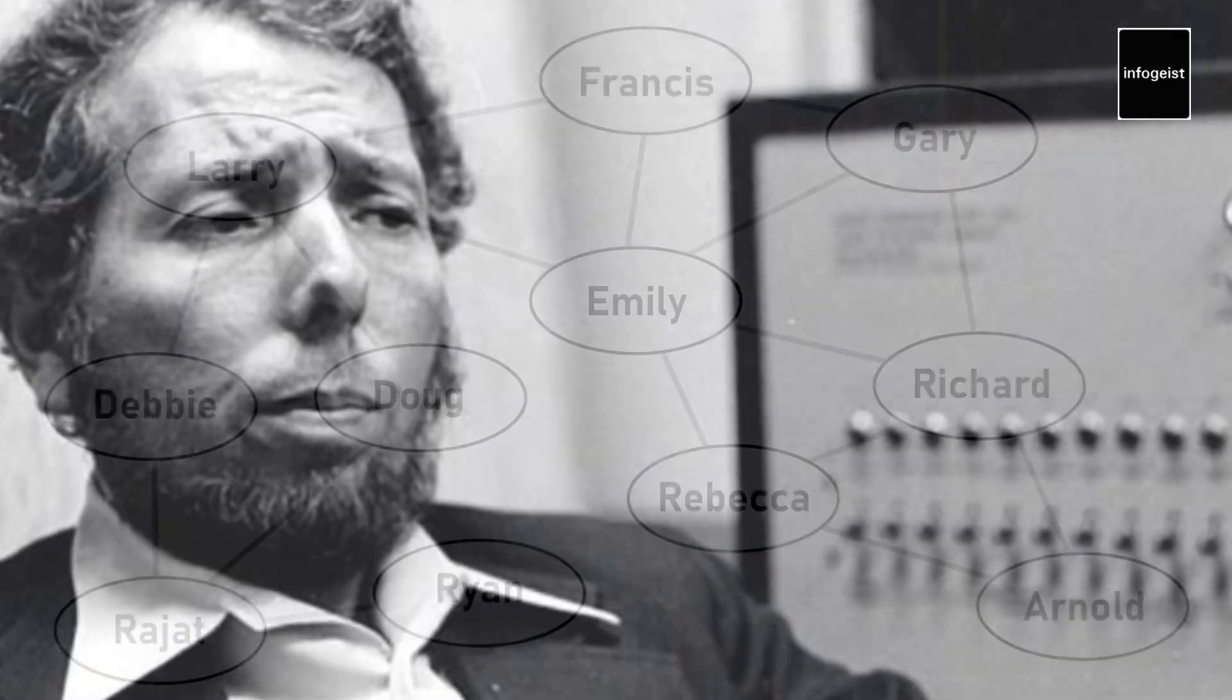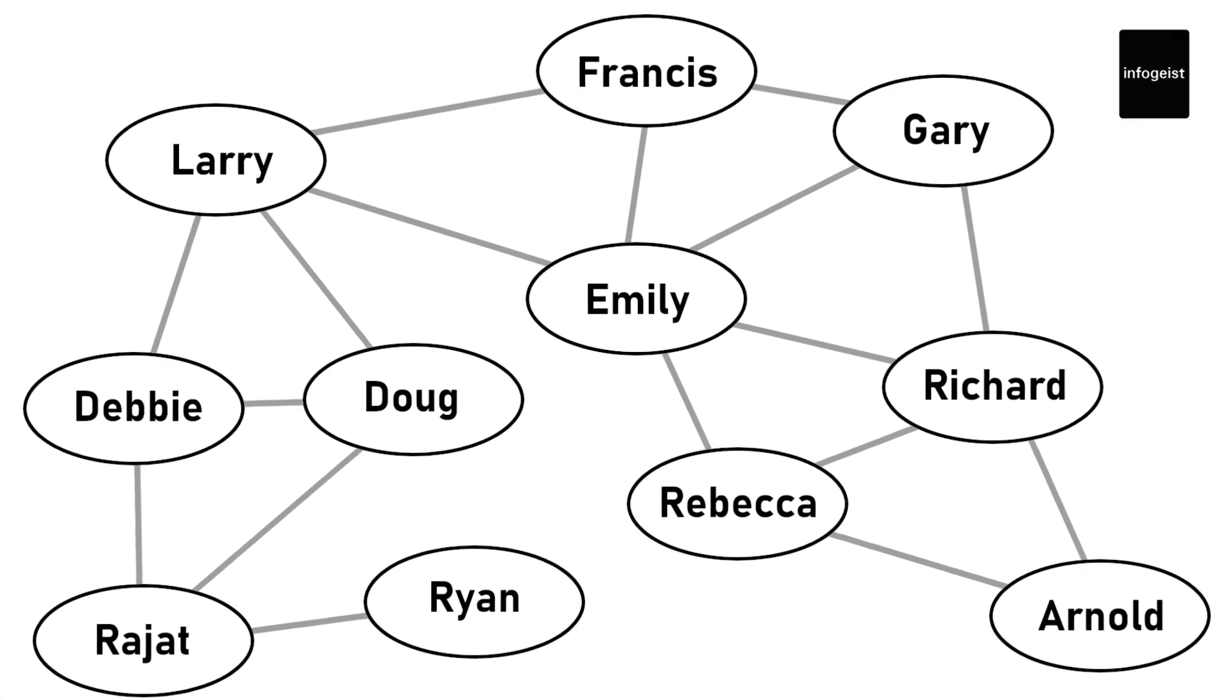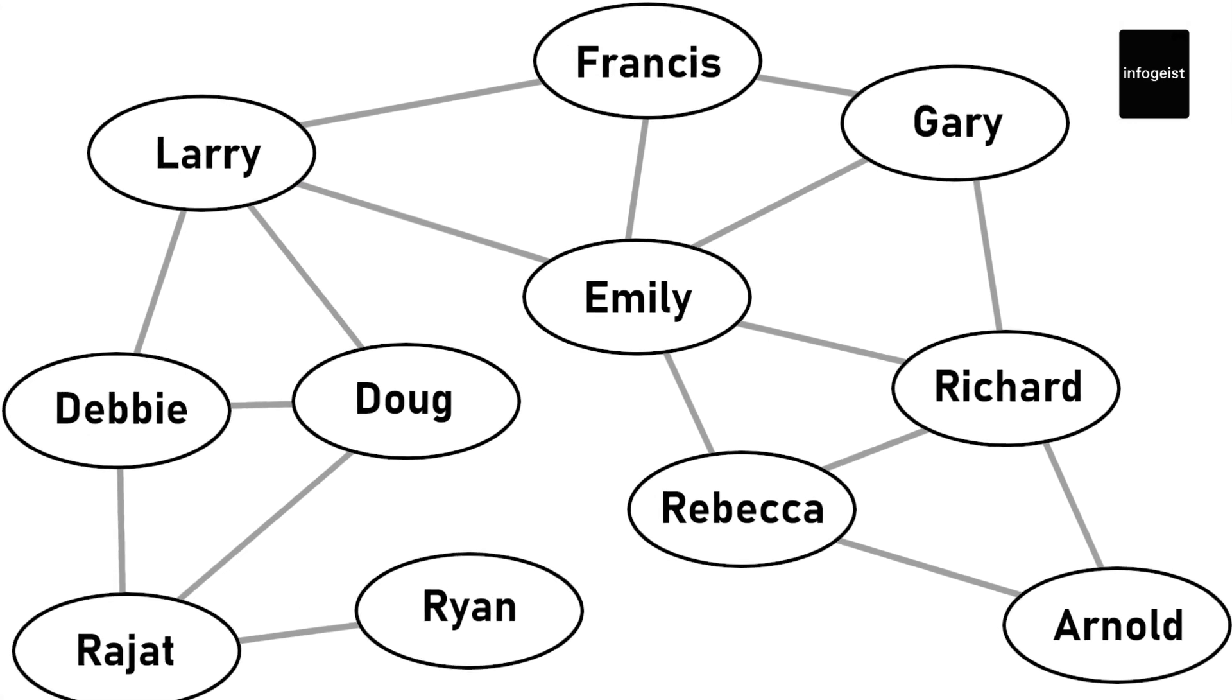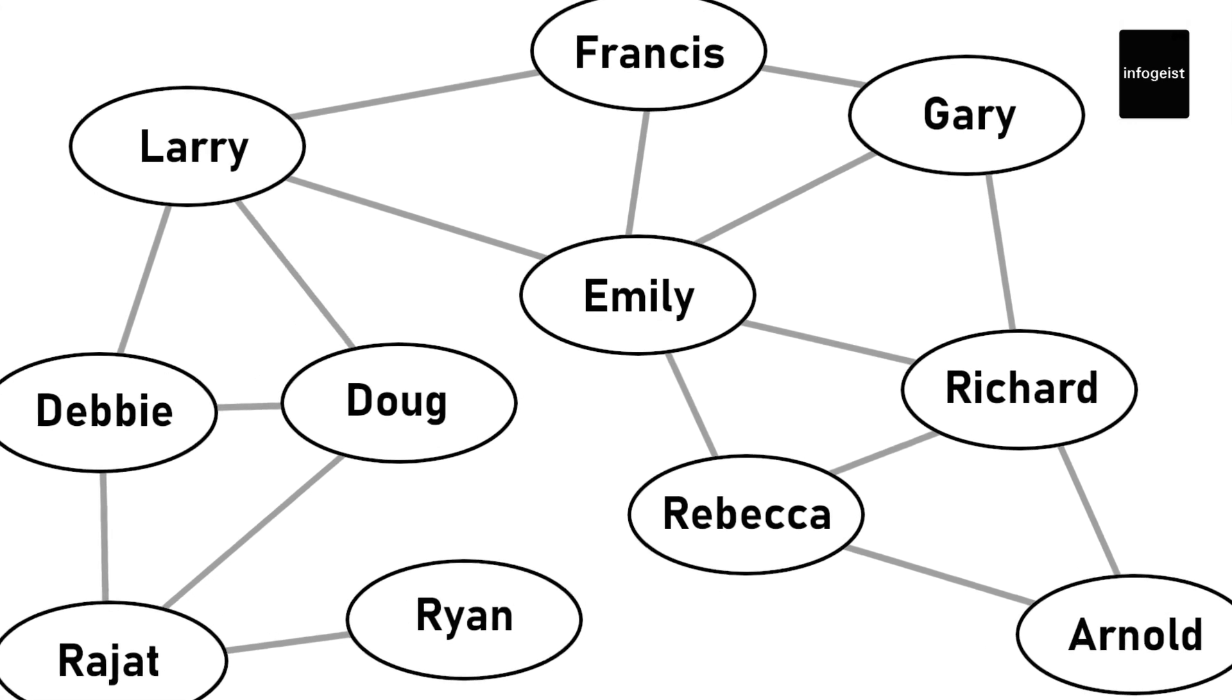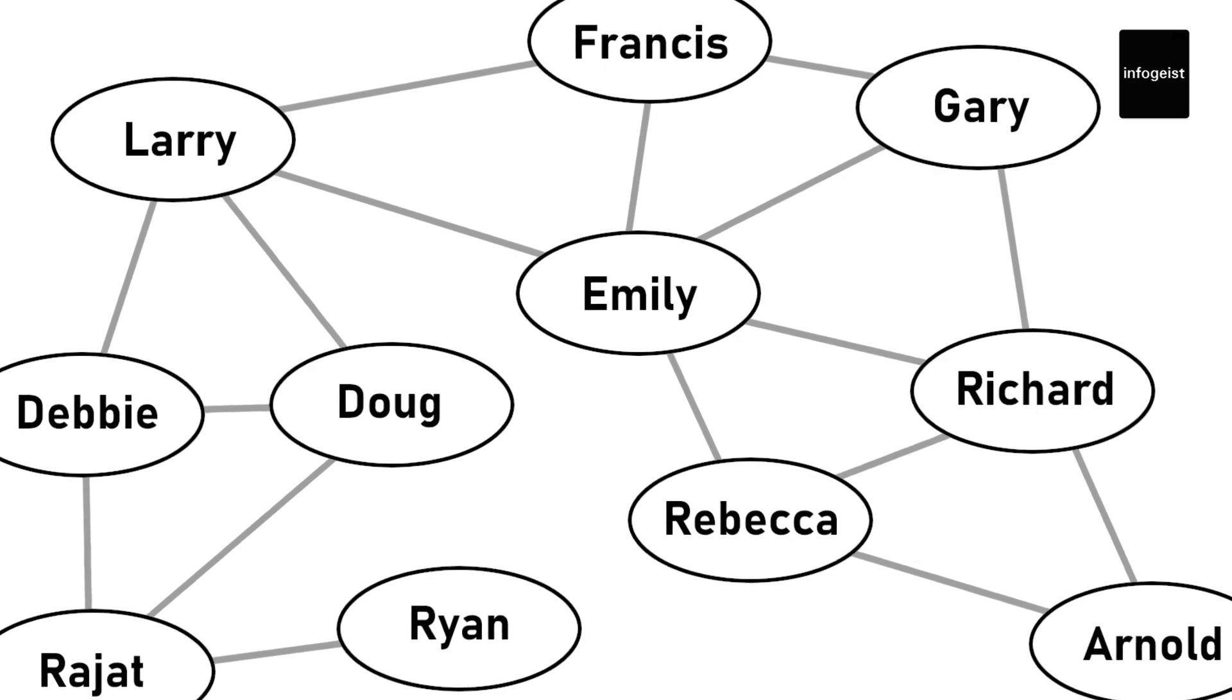The small world experiment conducted by social psychologist Stanley Milgram in the 1960s was a pivotal moment in the development of the six degrees of separation concept. Milgram randomly selected people in Nebraska and Kansas and instructed them to send a package to a target person in Massachusetts, using acquaintances to pass it along.